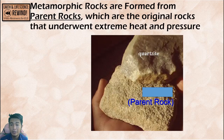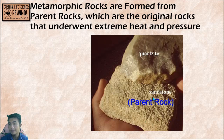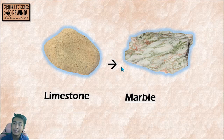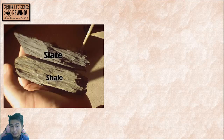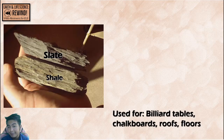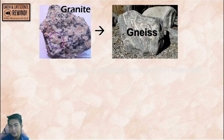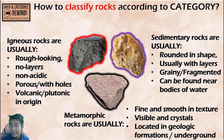Metamorphic rocks have parent rocks — the original rocks that underwent extreme heat and pressure. For example, quartzite is a metamorphic rock whose parent was sandstone; when sandstone was buried and underwent heat and pressure, it became quartzite. Limestone underwent heat and pressure and became marble, used for statues, buildings, and decorative materials. Shale became slate, used in buildings, tiles, billiard tables, and flooring. Granite, an igneous rock, can be transformed into gneiss with enough heat and pressure, and gneiss can be used as a durable construction material.